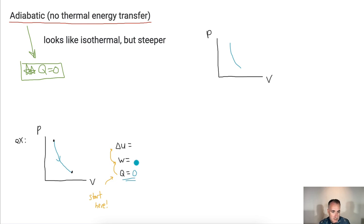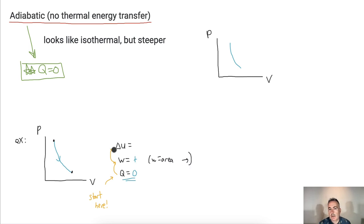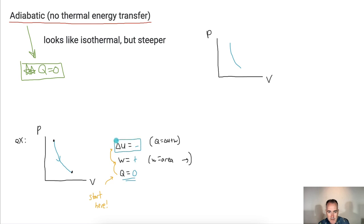Now let's look at the work done. In this particular case, the work done is positive — because work equals the area, and the process went to the right. What about the change in internal energy? It isn't obvious, but using Q equals delta U plus W, zero must equal something plus a positive. So delta U has to be negative.